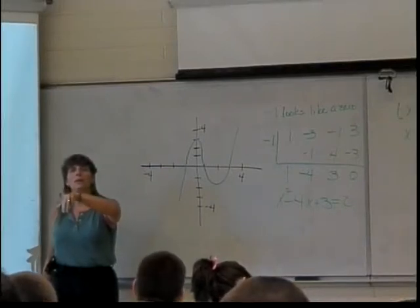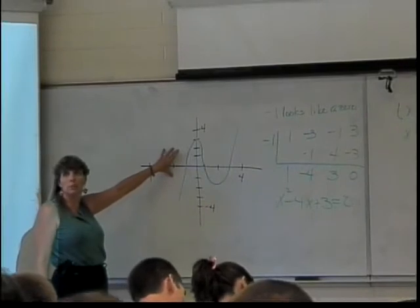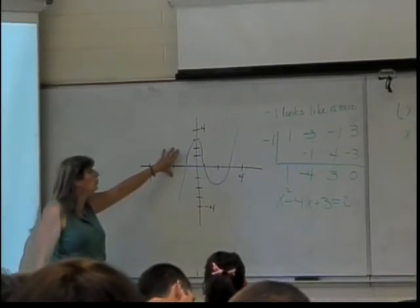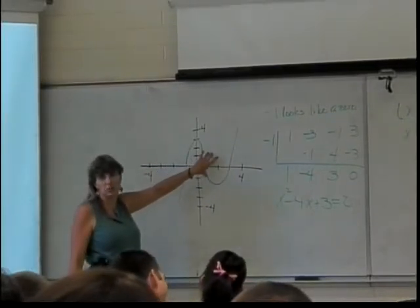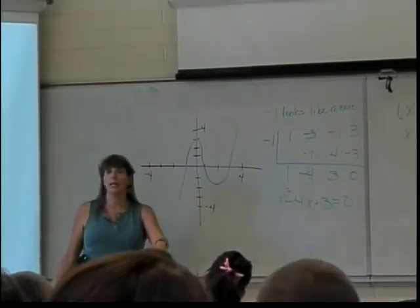So wherever it crosses the x-axis, you can use that as the... Right, so in this case, you guys picked negative 1. You could also have picked 1 because it looked good. You could have picked 3 because it looked good. And you still would have ended up with the same set of zeros in the end.